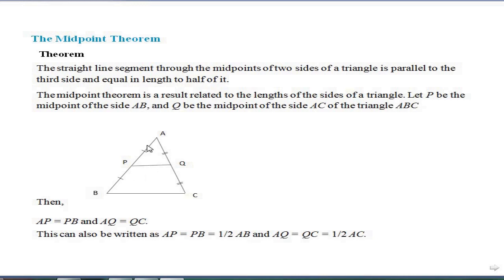Then AP equals PB, and AQ equals QC. This can also be written as AP equals PB equals half of AB, and AQ equals QC equals half of AC.